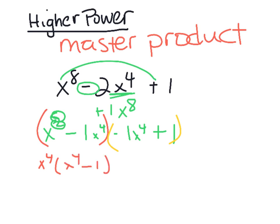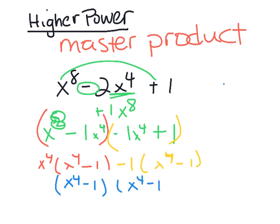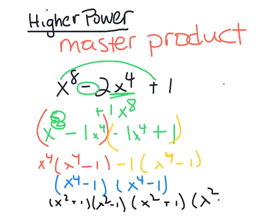GCF of the second group is −1, giving −1(x⁴−1). So the factors are (x⁴−1)(x⁴−1). Each x⁴−1 is a difference of perfect squares, factoring as (x²+1)(x²−1). Expanding: (x²+1)(x²−1)(x²+1)(x²−1). Note that x²+1 cannot be factored further (sum of squares), but x²−1 factors as (x+1)(x−1).